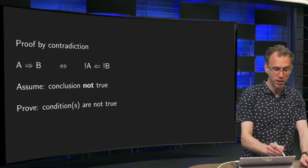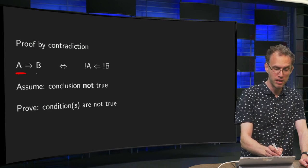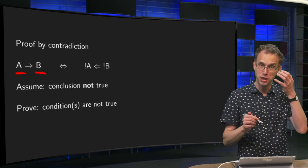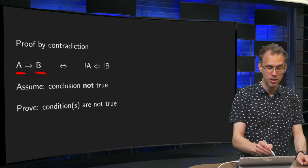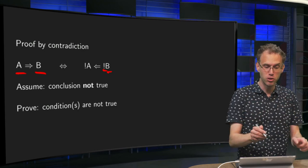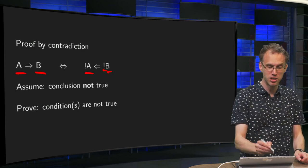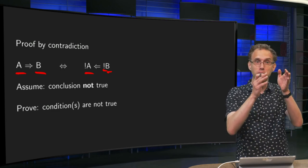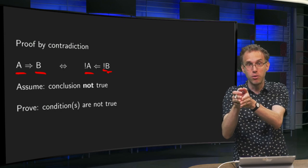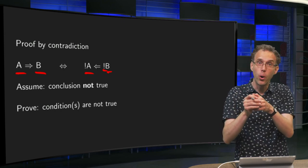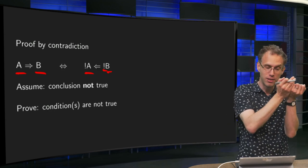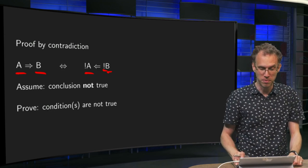You have a theorem where your condition A implies that B is true. Equivalently, what you can prove is — the exclamation mark means NOT — so that NOT B, if B is not true, implies that A is not true. So you can either prove that if your condition is true then your conclusion is true, or you can prove that if your conclusion is not true then your conditions are also not met.